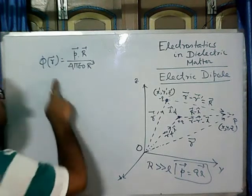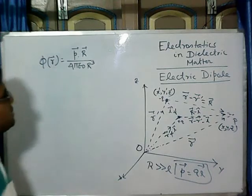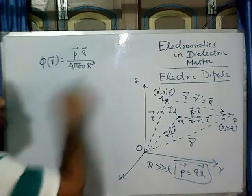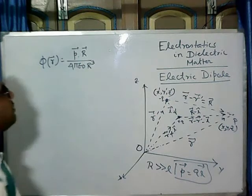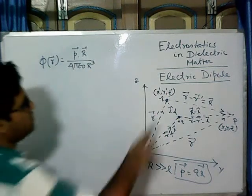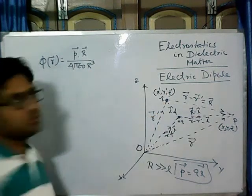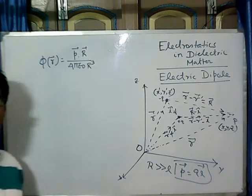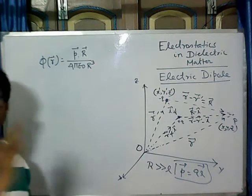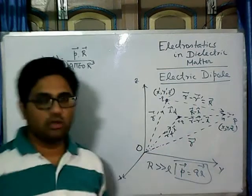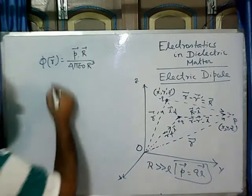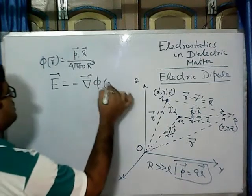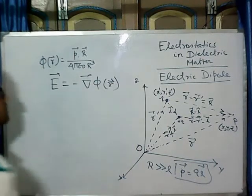In the last class we saw the electrostatic potential form of the electric dipole is like this, where P is the dipole moment, R is the distance from the minus Q charge to point P. Now to find out the electric field at any particular point P, we have to perform this gradient operation on the electrostatic potential.